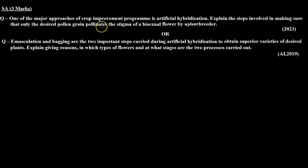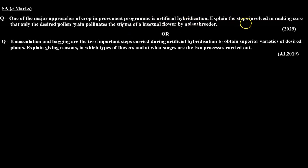In this question, it says that the crop improvement program of artificial hybridization is a very important approach. We need to explain the steps so that the desired pollen grains will reach the stigma of a bisexual flower. This question was recently asked in 2023.